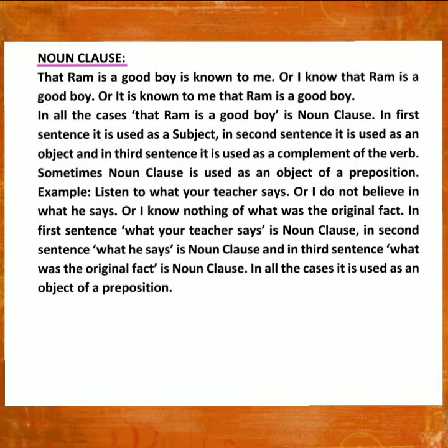Sometimes a noun clause is used as an object of a preposition. Example: 'Listen to what your teacher says', or 'I do not believe in what he says', or 'I know nothing of what was the original fact.' In the first sentence, 'what your teacher says' is a noun clause. In the second sentence, 'what he says' is a noun clause. In the third sentence, 'what was the original fact' is a noun clause — all used as objects of a preposition.